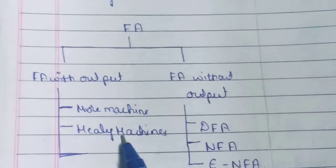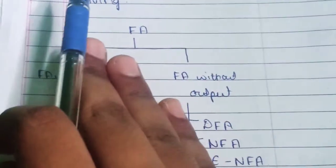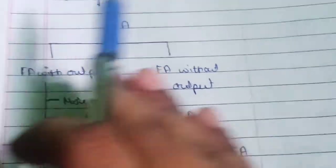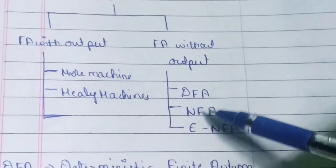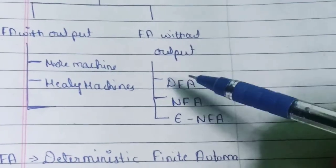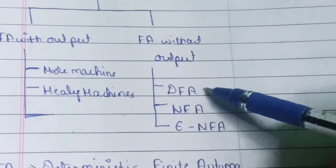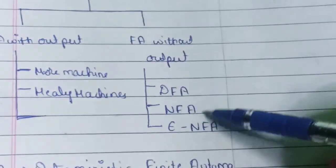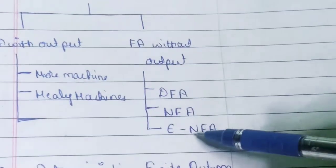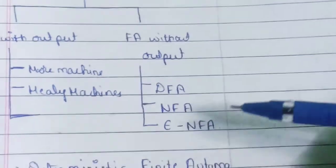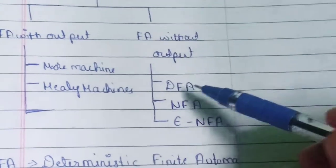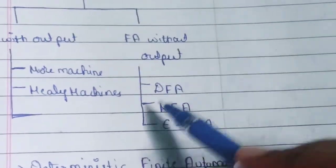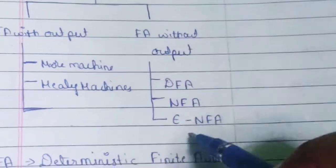In our upcoming videos, we will concentrate more on finite automata without outputs — that is, DFA, NFA, and epsilon-NFA. DFA stands for Deterministic Finite Automata, NFA stands for Non-Deterministic Finite Automata, and epsilon-NFA stands for Epsilon Closure Non-Deterministic Finite Automata. We will discuss each type in detail in upcoming videos.